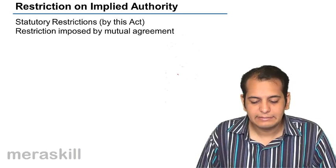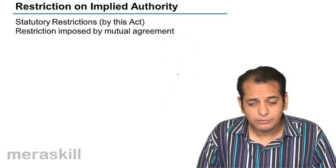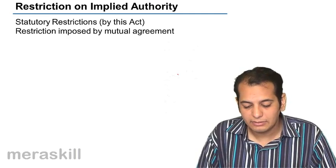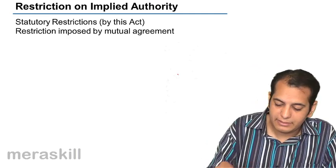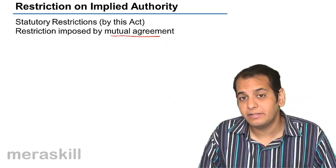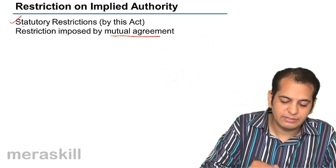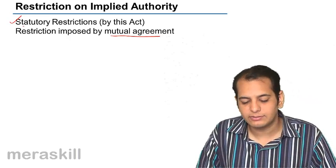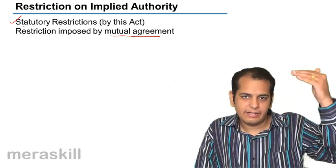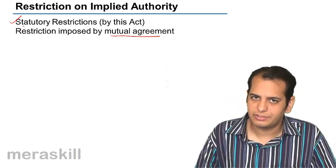As we've already studied, there are two types of restrictions on implied authority. First, the partners by their mutual agreement may restrict. Second, we have seen statutory restrictions — that is, restrictions by this act — the eight restrictions that we studied.